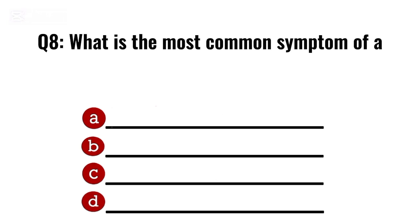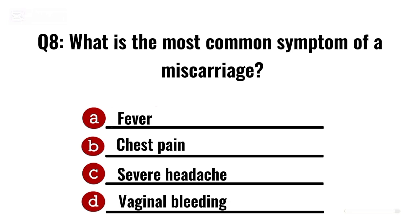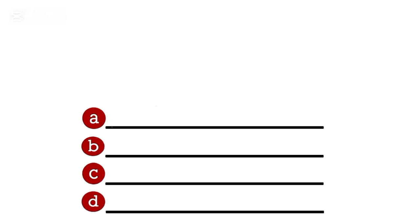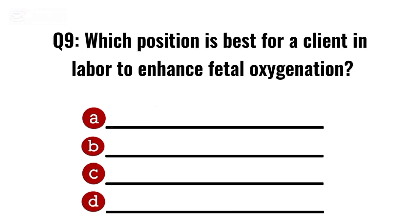Question 8. What is the most common symptom of a miscarriage? Correct option D: Vaginal bleeding.